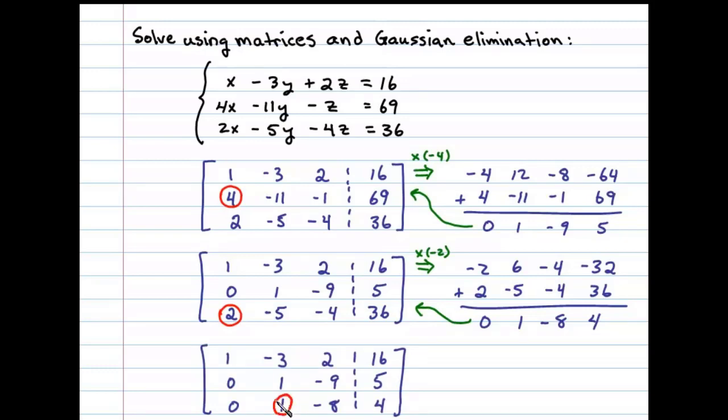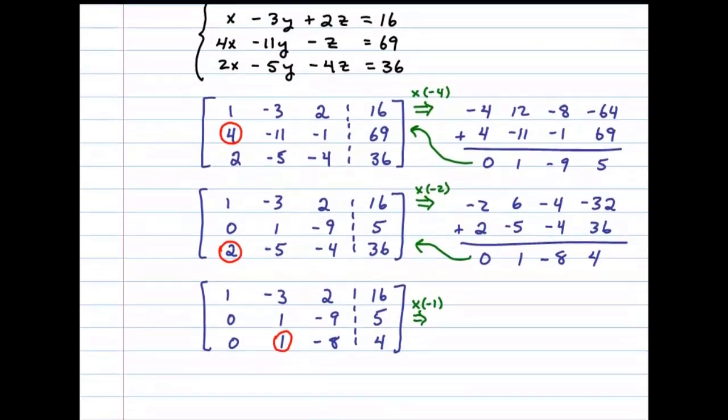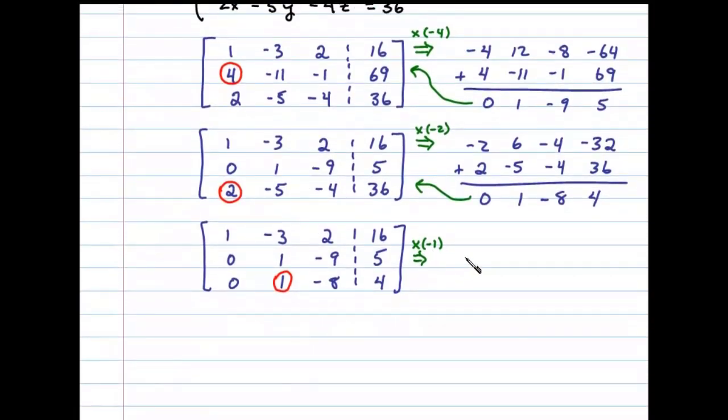To do that, we can multiply the second row here by negative 1. Doing that, we get 0, negative 1, 9, and a negative 5. Rewriting the third row right underneath that, we can then add these together.